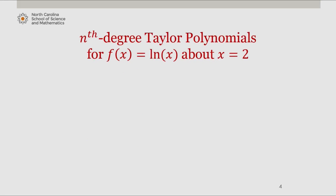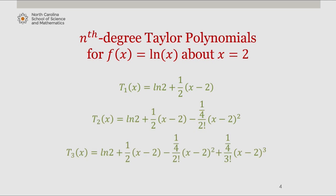So the n-th degree Taylor polynomial for natural log of x about x equals 2 will start with the linear approximation, which is natural log of 2 plus 1 half times x minus 2. The second degree Taylor polynomial is as you see here.